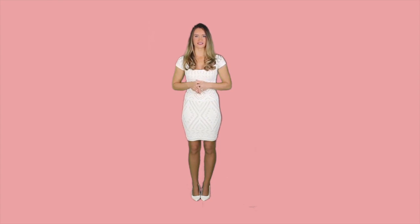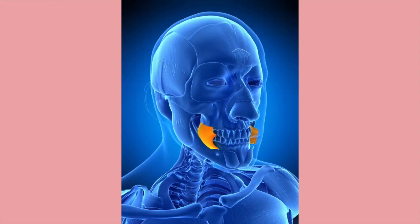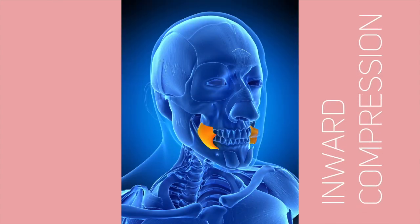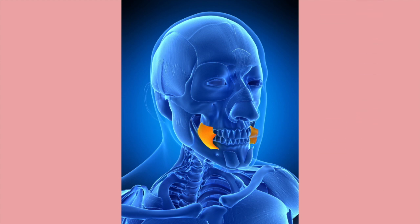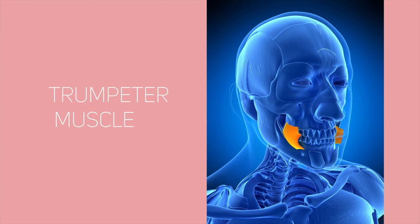Next, let's look at the buccinator muscle, found in between the interior and exterior walls of the cheeks. Its contraction causes an inward compression of the cheeks and it is referred to at times as the trumpeter muscle, since it aids air to be blown outside the mouth.